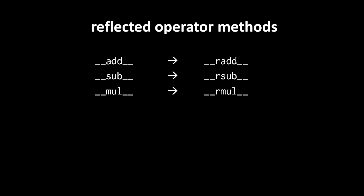Python invokes these reflected operator methods in a scenario where first the two operands are of different types and if the regular method, the non-reflected method, is first invoked and then raises the not implemented exception.